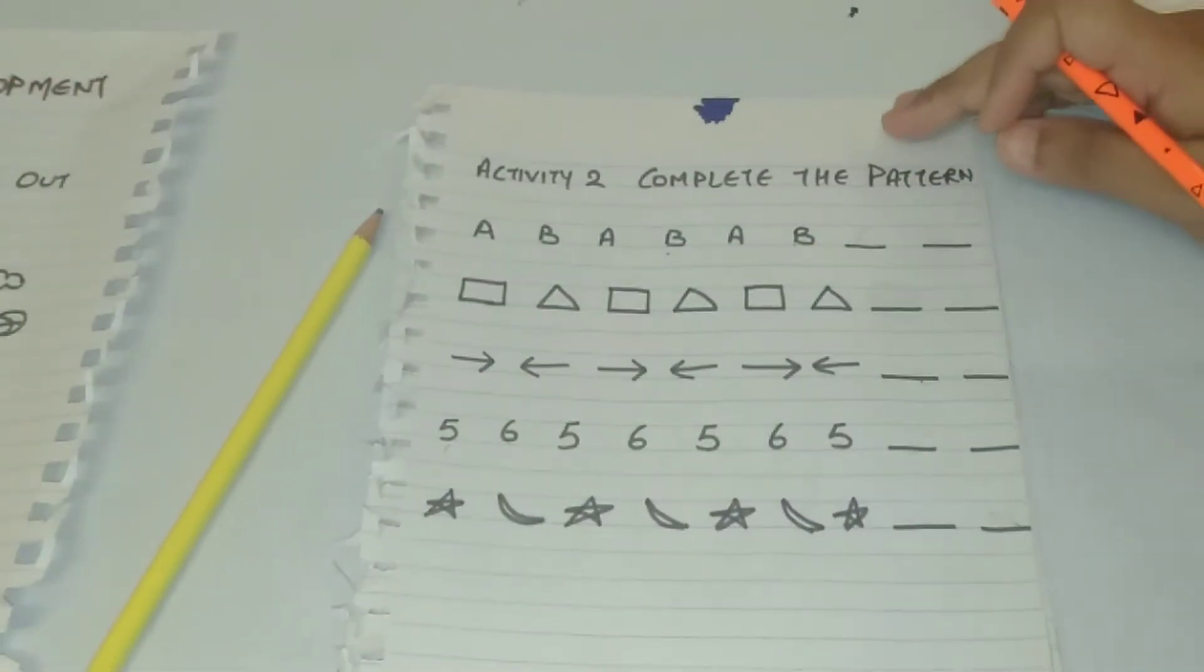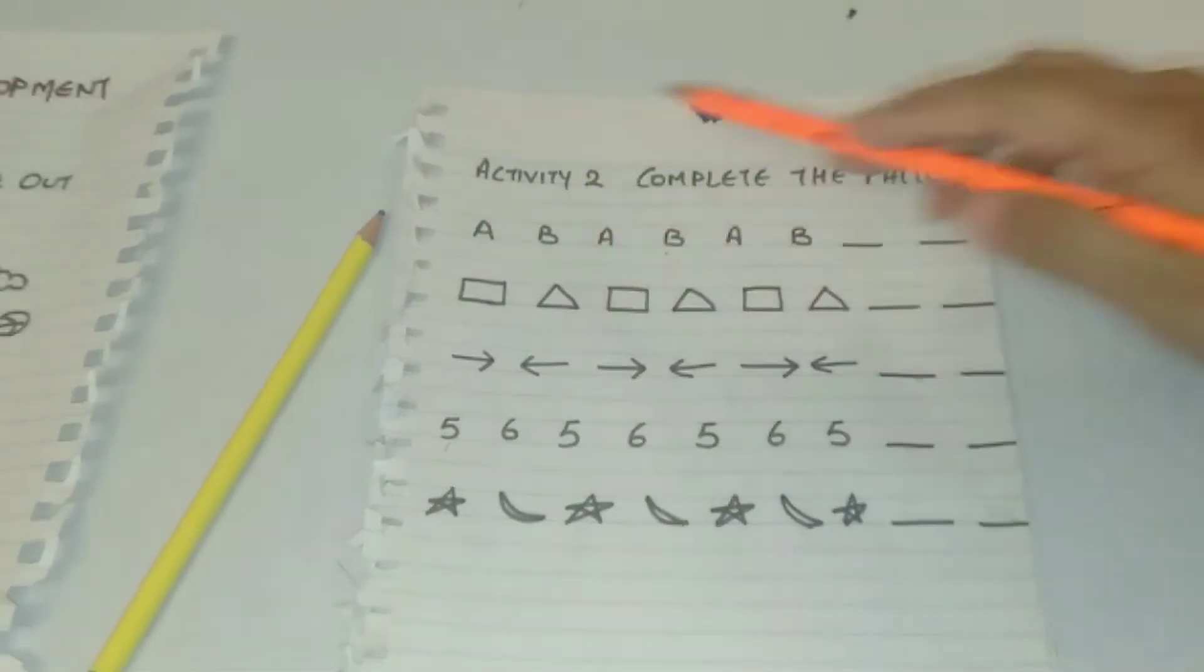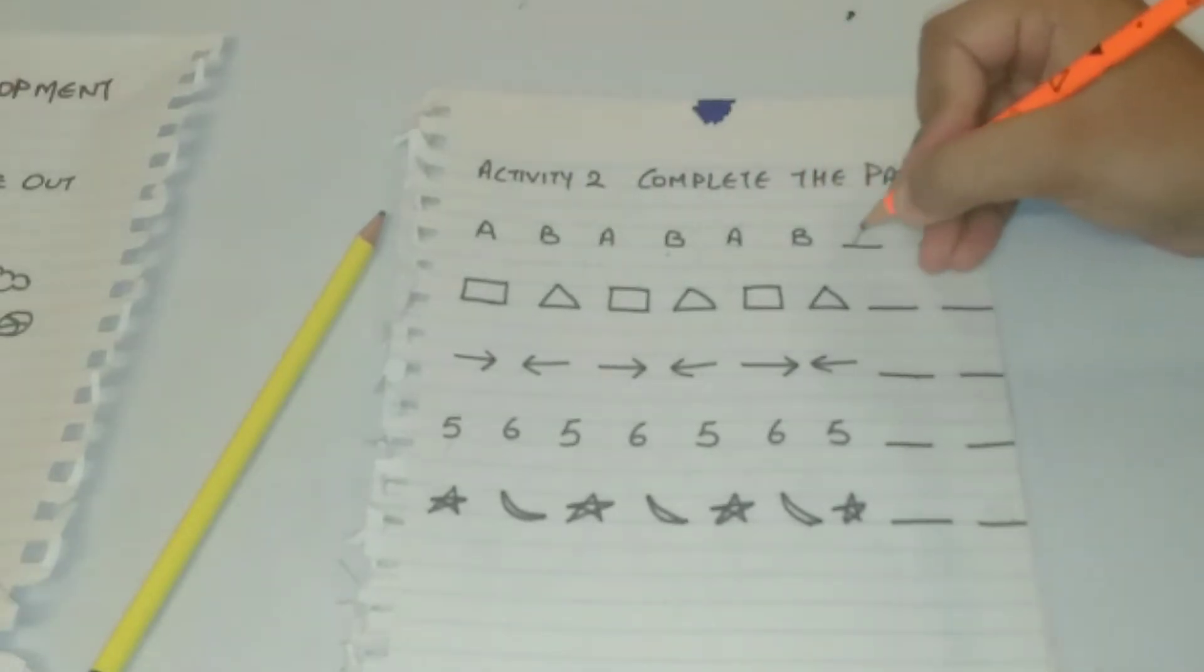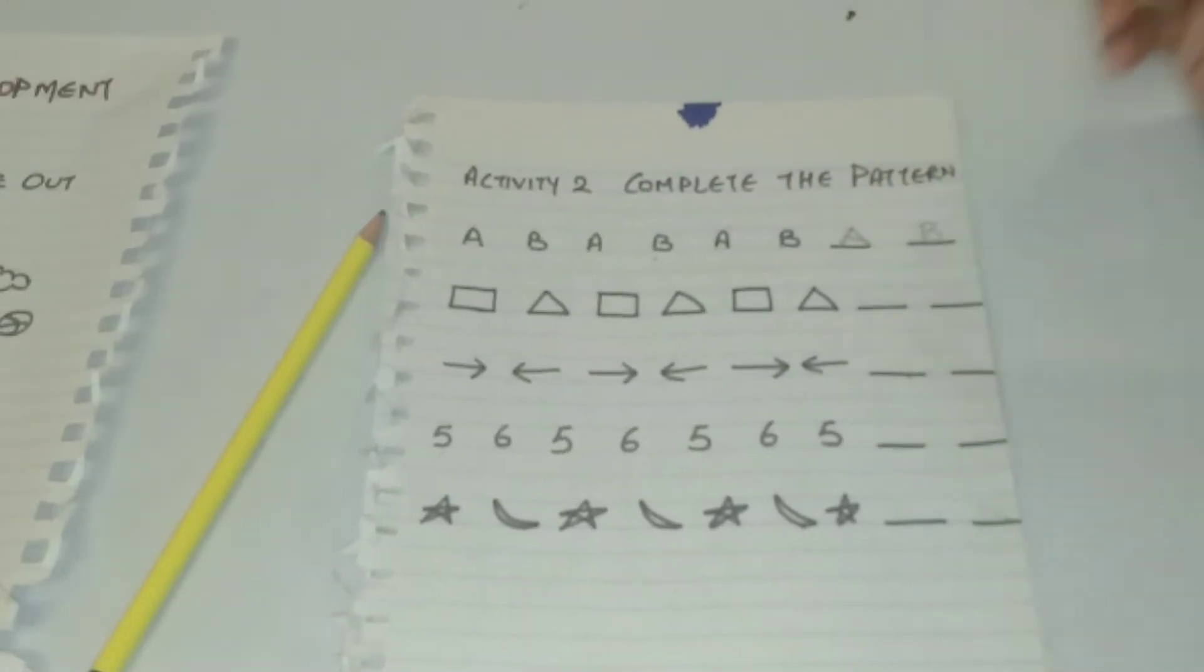The second activity is complete the pattern. There is a particular pattern and the child has to complete it like A, B, A, B, A, B. What comes next will be A, B, A, B.